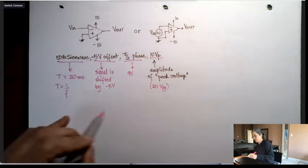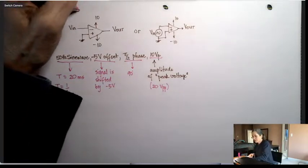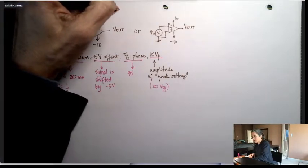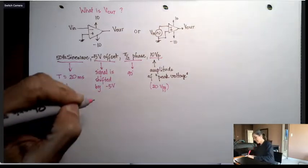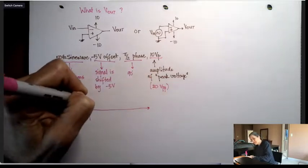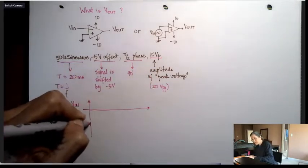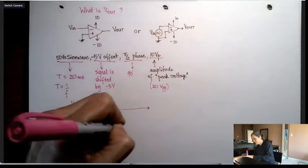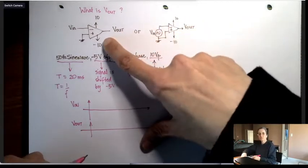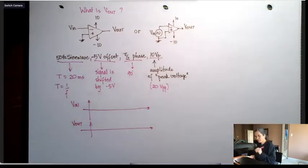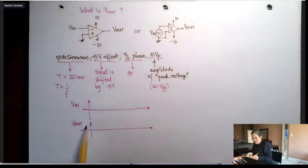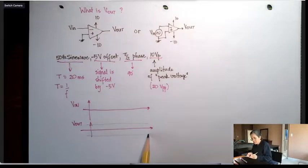So I'm going to first draw this, and the question is, what is V out? In this case, I'm expecting you to draw V out. So for now, I'm going to draw V in. This is going to be V in, and here I'm going to draw V out. Now look, V out, or this circuit here, is a comparator. So V out is always either going to be plus 10 or minus 10.